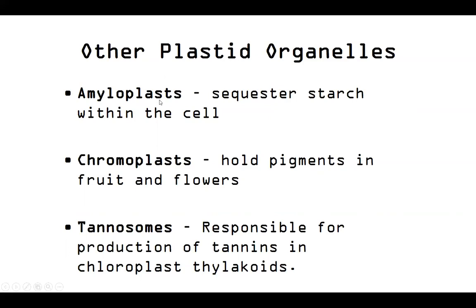Amyloplasts are going to sequester starch within themselves — you can probably think of a lot of reasons a plant would want to sequester starch. We're also going to have chromoplasts, which hold the pigment in fruit and flowers, and this is really important for a plant's fitness.